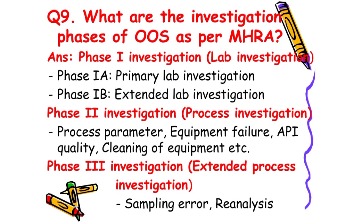Next: What are the investigation phases of OOS as per MHRA? The answer is: there are three phases used to investigate OOS as per MHRA. Number one is phase one investigation, which is further divided into phase one A and phase one B. Phase one A includes primary lab investigation, and phase one B includes extended lab investigation. Number two is phase two investigation, which includes process parameters, equipment failure, API quality, and cleaning of equipment. Number three is phase three investigation, which includes sampling error and reanalysis.